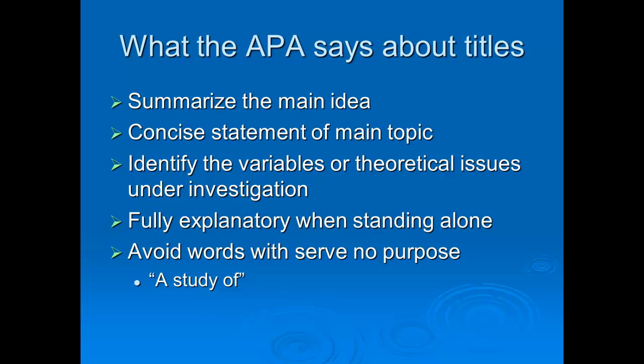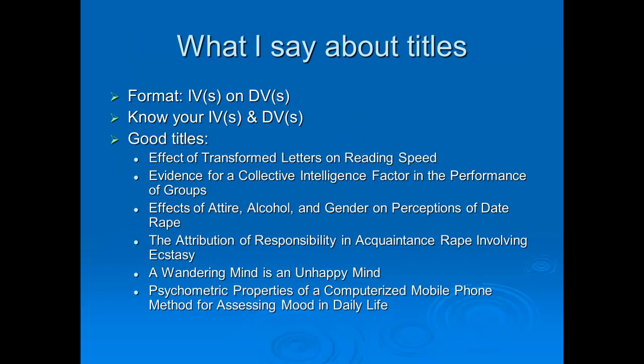That's what the APA says about titles. Let me go one further and one better. The easiest way to write a title is in this format: the independent variable on the dependent variable, or the independent variables on the dependent variables. This is short, there are no useless words, it stands alone, and it conveys the important issues. That is the format I require all my students to do their titles in. This requires that you know what your IVs and DVs are, and often students aren't aware of that or how important they are. So this is the important issue on the title page — you're really starting to think about what is my experiment, what's my IV, what's my DV.